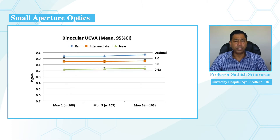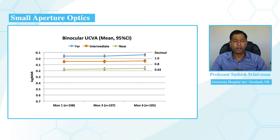This graph shows mean binocular uncorrected visual acuities at far, intermediate, and near at months one, three, and six. As you can see, due to binocular summation, the binocular uncorrected visual acuities for all distances are better compared to the monocular acuities in the IC8 eye.